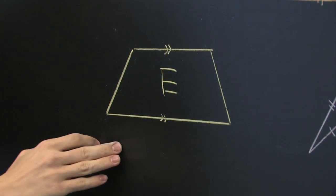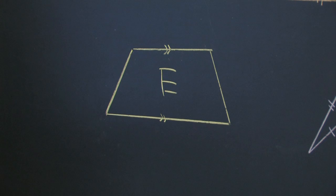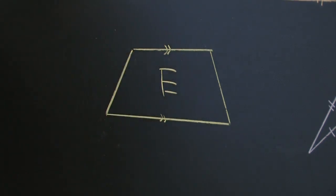We have the trapezoid, which has some different definitions, but the one that we will use is that it has at least one pair of parallel sides.